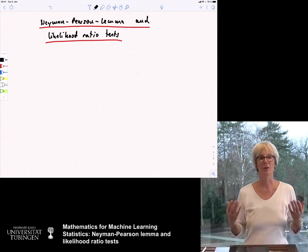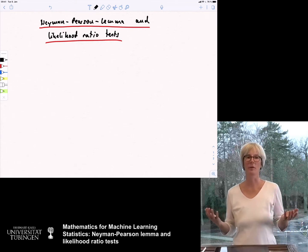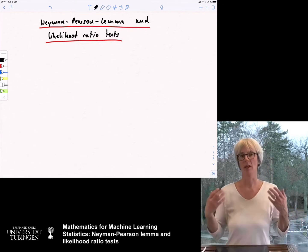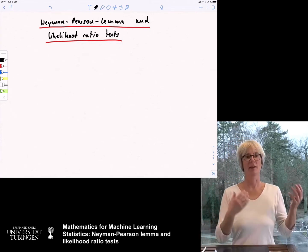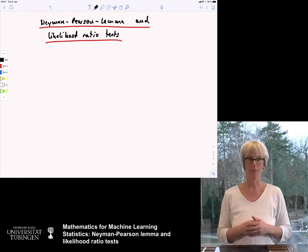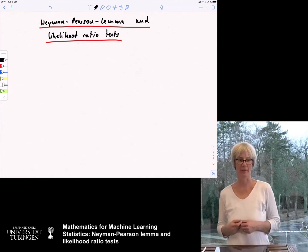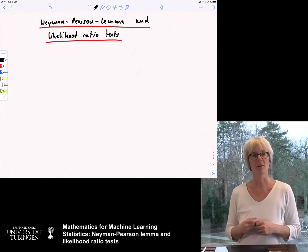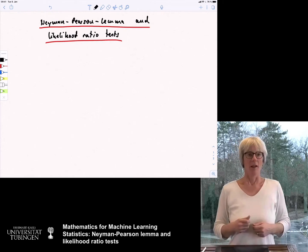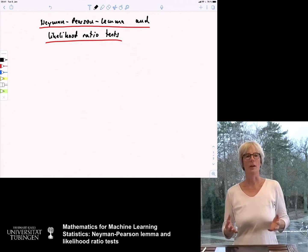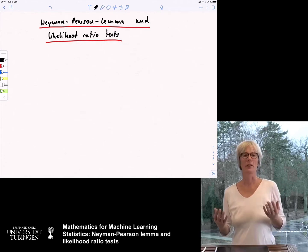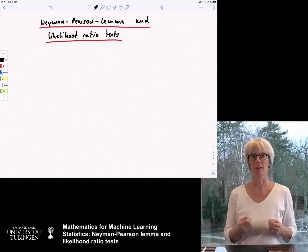I have also introduced that there is a concept of the uniformly most powerful test, which is if you are given a set of tests of level alpha, you can select the one that is the best among all of them, and said that this is rare, so in practice often it does not happen. There is one situation where it does happen, and this is described in the Neyman-Pearson lemma.